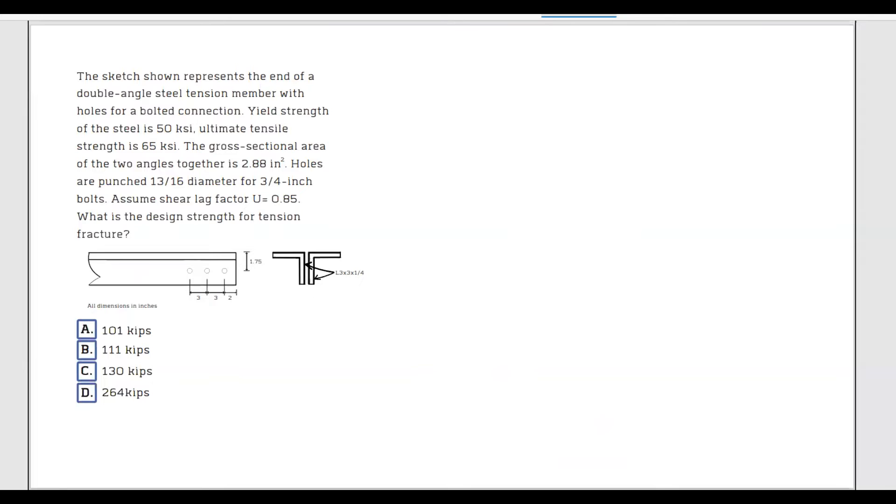So again, I'll just go ahead and start with the formula given in the FE handbook for fracture. And we have PN equals FU times AE. Now let's go ahead and I would like to talk about what AE is. And of course, FU is given in the problem. FU is the ultimate tensile strength and it is 65 ksi.